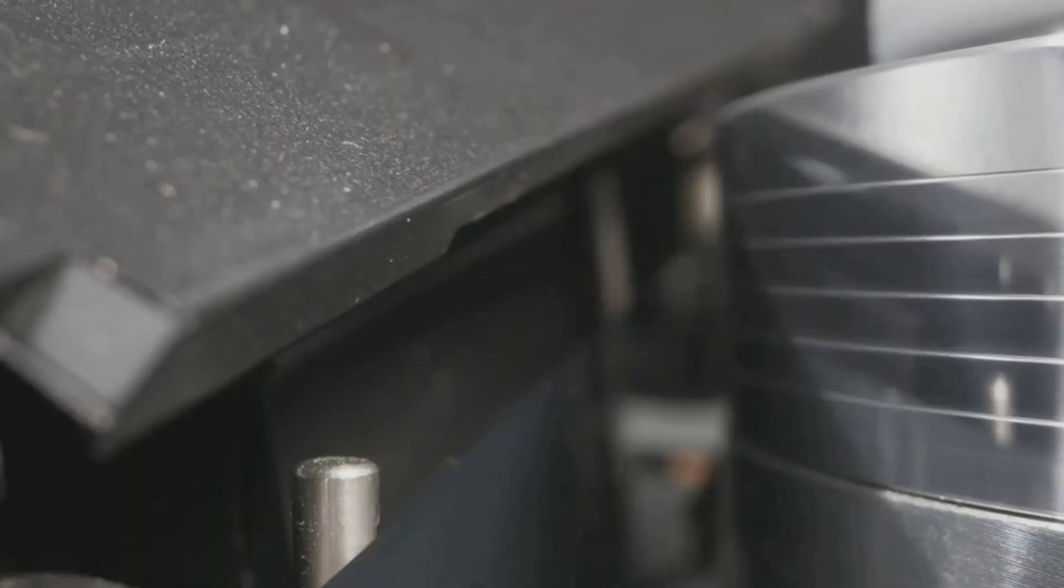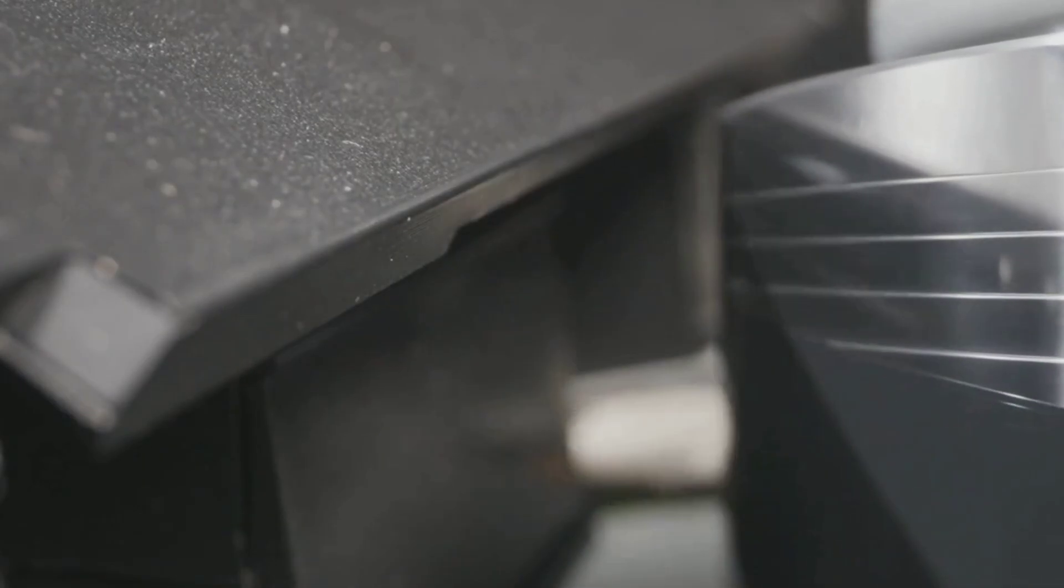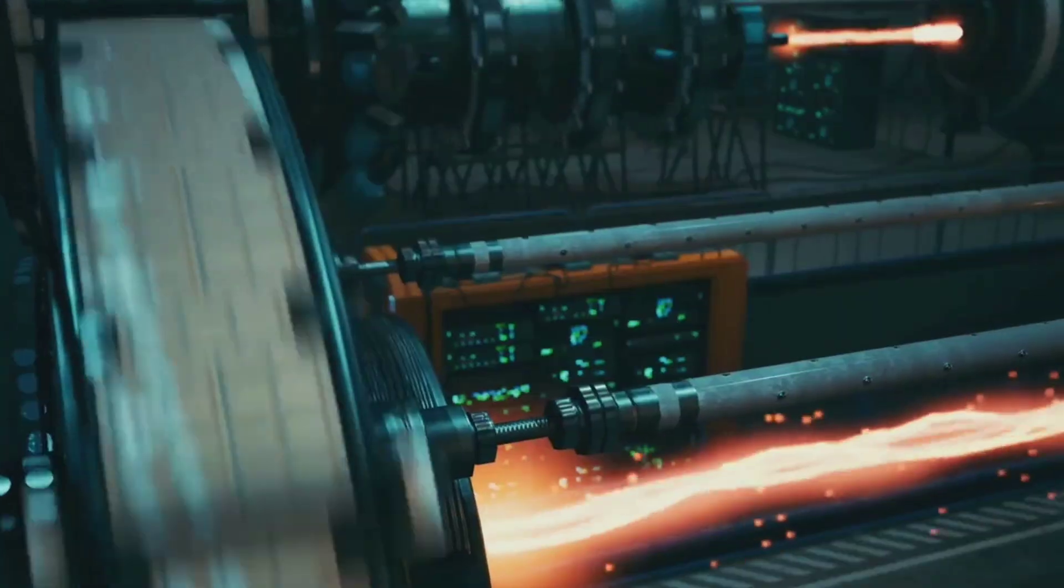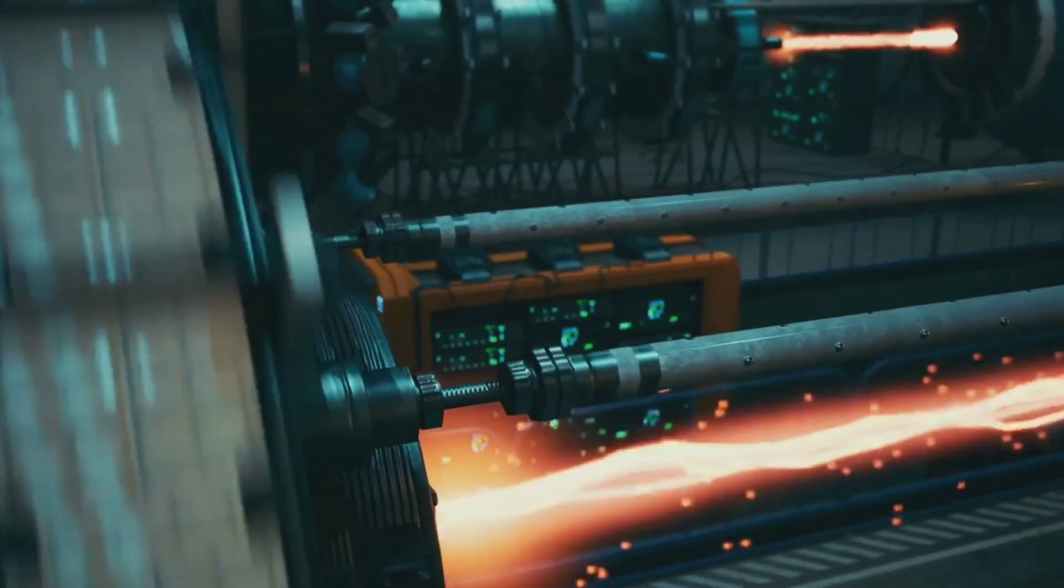As the rotor turns, the commutator rotates too. Just as the torque would drop, the commutator switches the current direction in the coil. This reversal gives another kick, keeping the rotation smooth and continuous. That's how electricity becomes motion in a DC motor.